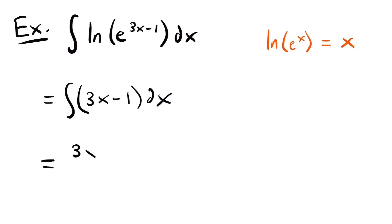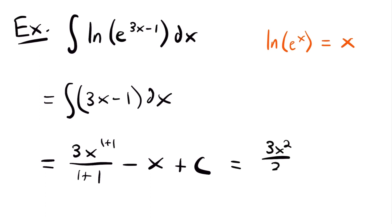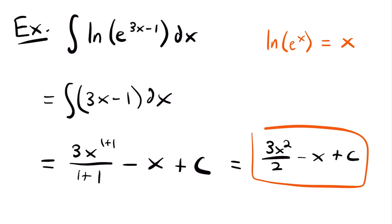Now this is a fairly basic integral we can solve using the power rule of integration. This equals 3 times x to the power of 1 plus 1 divided by 1 plus 1, minus x. Adding 1 to the exponent and dividing by the new exponent, and integrating the constant negative 1 by multiplying by x, we get negative x. Don't forget to add plus c. Simplifying, this equals 3x squared divided by 2 minus x plus c. That is the antiderivative. Don't get tripped up by seeing the natural log of e to some power — just know that the natural log and e will cancel out.